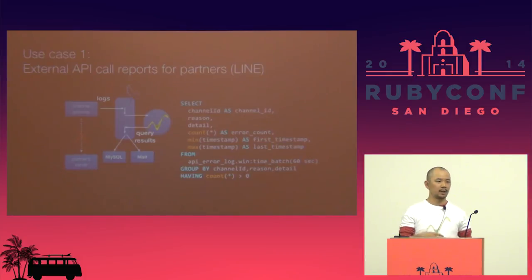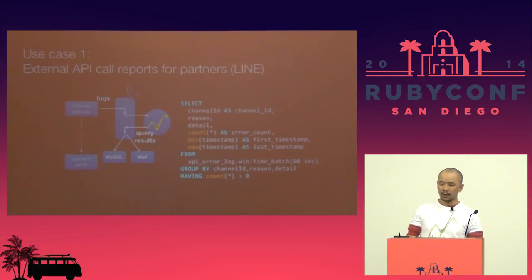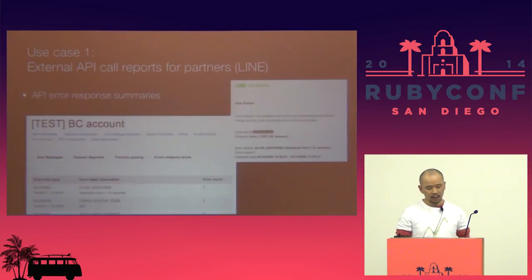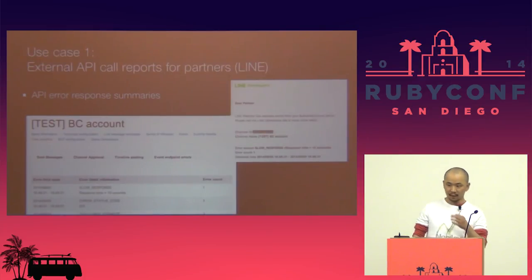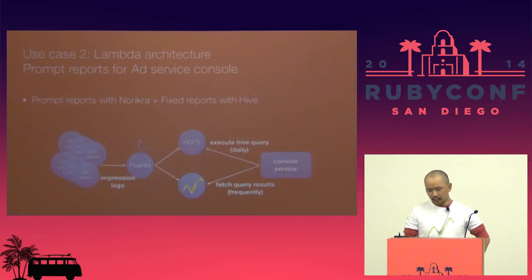Norikra puts out the summarized output, and Fluentd sends an email to our partners. At the same time, Norikra saves these summarized log results into MySQL, and then our administration console shows the summarized logs to our partners. Error log summarization is a very major use case for Norikra.